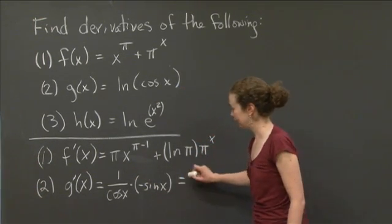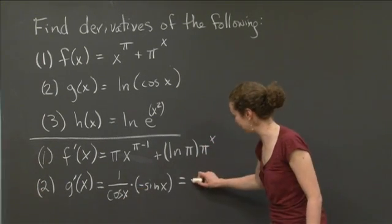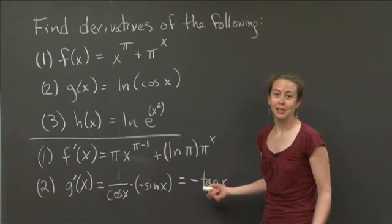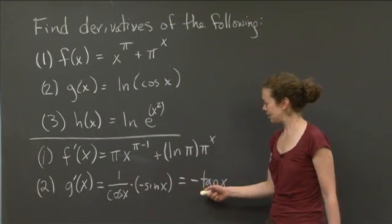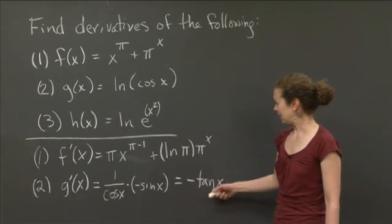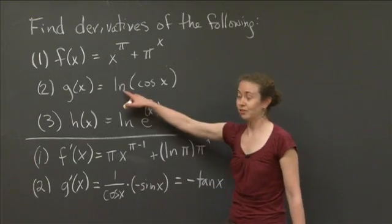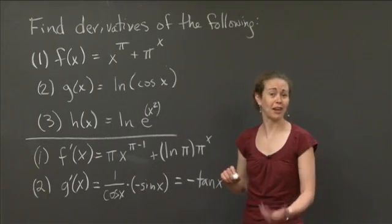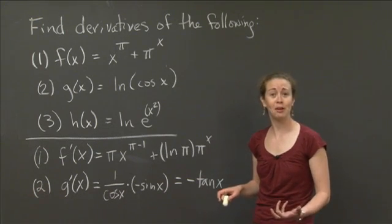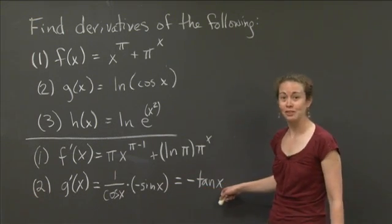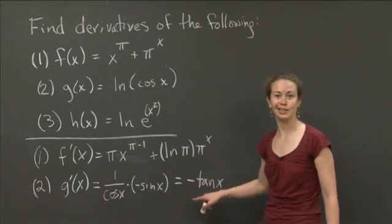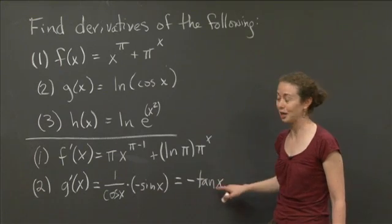The derivative of cosine x is negative sine x, so you get negative sine over cosine, which is negative tangent x. The reason I particularly like this one is that we see: if I wanted to find a function whose derivative was tangent x, a candidate would be the negative of the natural log of cosine x. So we see there are trigonometric functions where I can differentiate something that's not purely trigonometric and get something trigonometric.